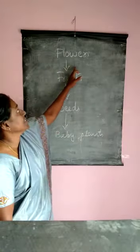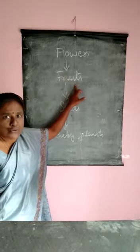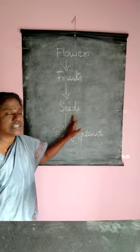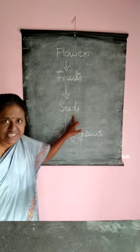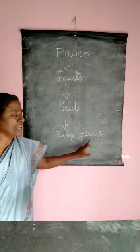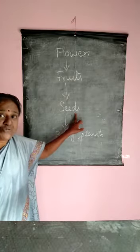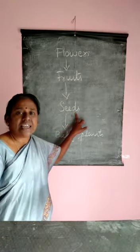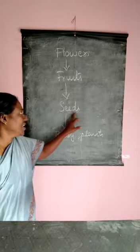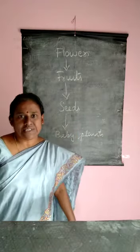Flowers. Most flowers grow into fruits. Inside the fruits there are seeds. Inside the seeds there are baby plants. Seeds get sufficient sunlight, air and water, and they grow into baby plants.